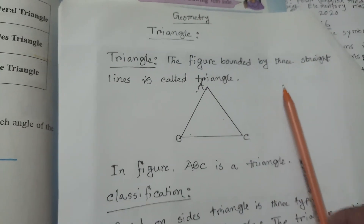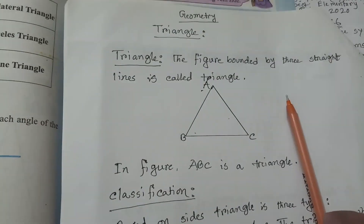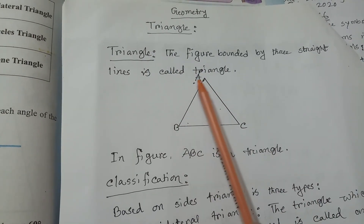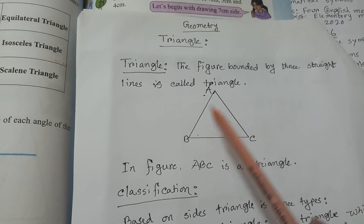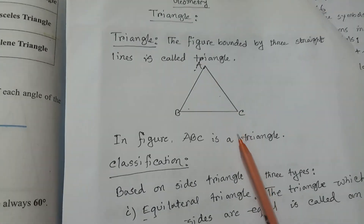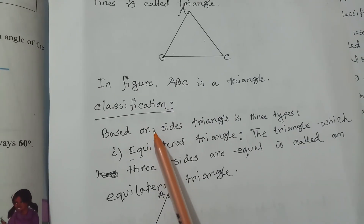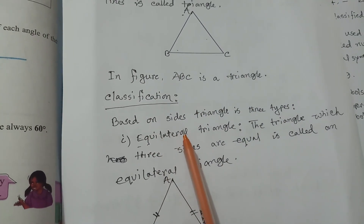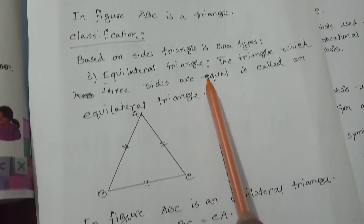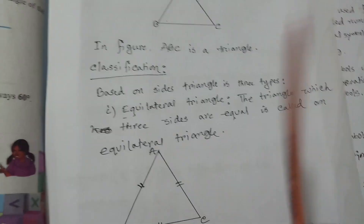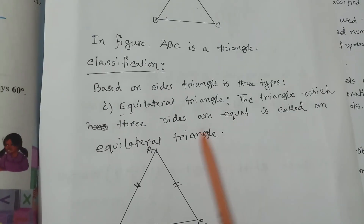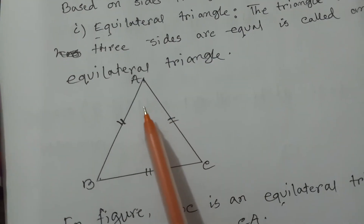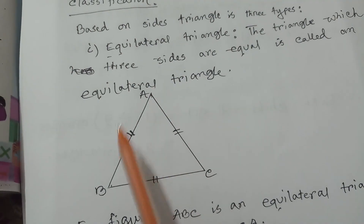Dear students, today's class I have discussed about triangle and its classification. The figure bounded by three straight lines is called a triangle. In figure ABC is a triangle. Triangle is classified mainly two types: based on sides and based on angles. Based on sides, triangle is three types: number one, Equilateral Triangle — the triangle whose three sides are equal. ABC is an equilateral triangle and sides AB, BC, and AC are equal.